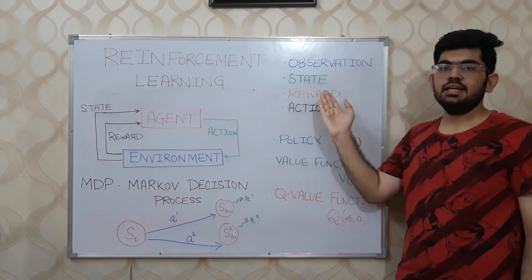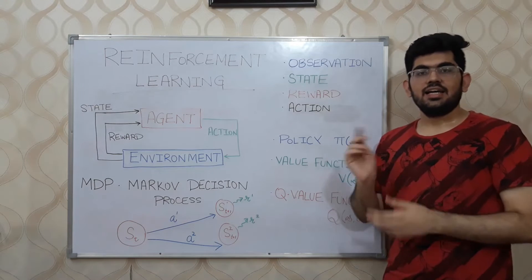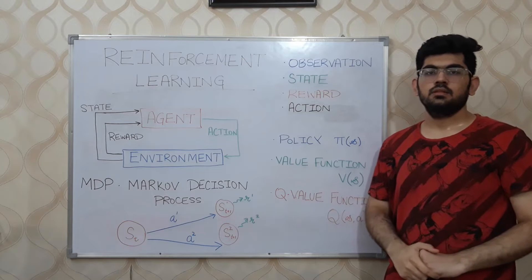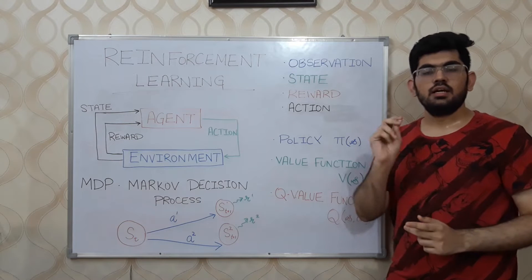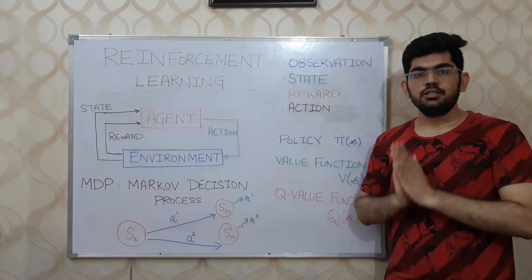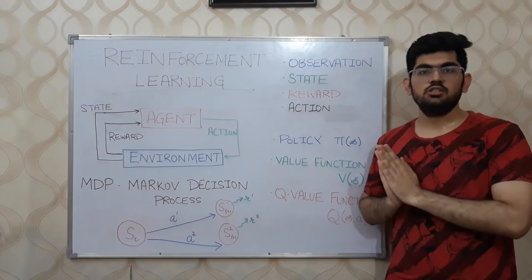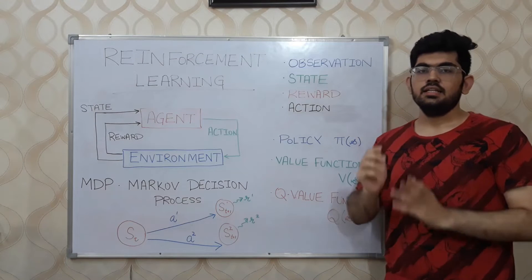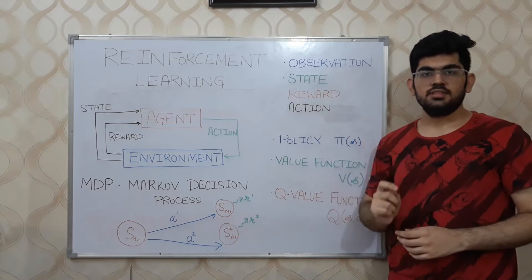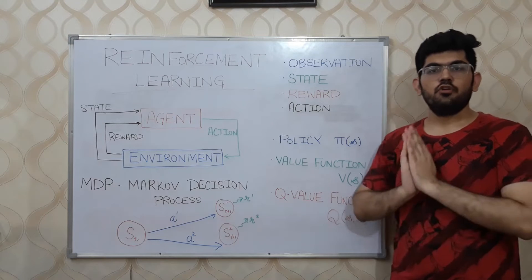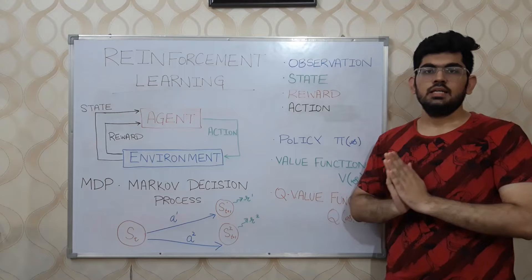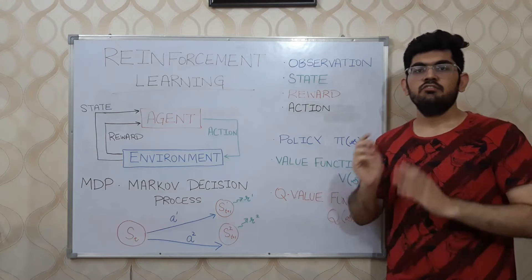These four concepts are observation, state, reward, and action. Reward and action are as defined before. The observation and the state are almost similar but have a small difference. The state represents the complete information about the current situation of the agent in the environment, whereas the observation is a subset of the state information — it only gives partial information about the current situation. For simpler problems, the observation and the state are the same. For harder problems, like a robot present in a room, the laser readings would represent the observation and the actual location of the robot on the map of the room would represent the state.